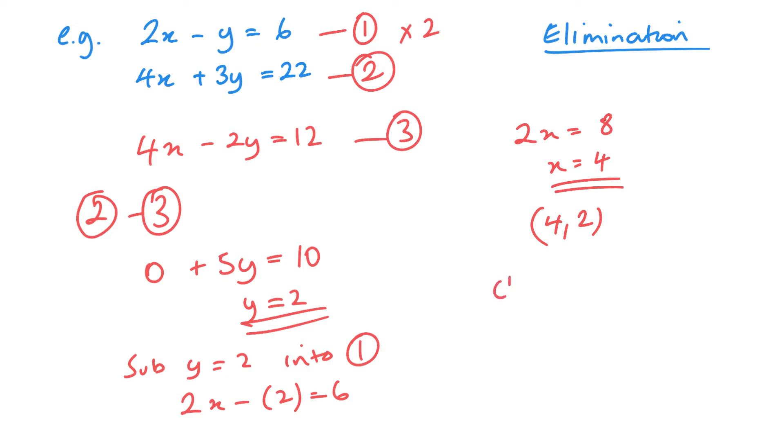Now I can do a check, and in that one I'm going to use the other equation. If I look at my left-hand side, I've got 4 lots of 4 plus 3 lots of 2, and I substitute in 4 and 2, and that's going to give me 16 plus 6, which is 22, and you can see that that does equal the right-hand side. So my check is complete. That's the elimination method.